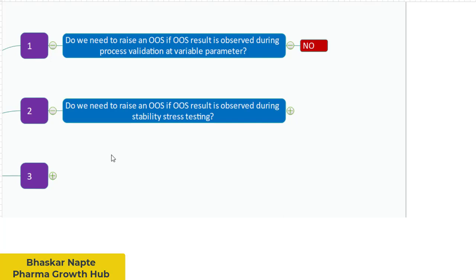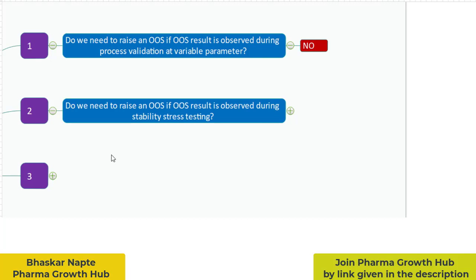As part of a stability study, we conduct stress testing — for example, pH, temperature, humidity, and photo-light stress testing. During stress testing, you are exposing the product under very harsh conditions, which may result in specification failure, perhaps for impurities or for assay.